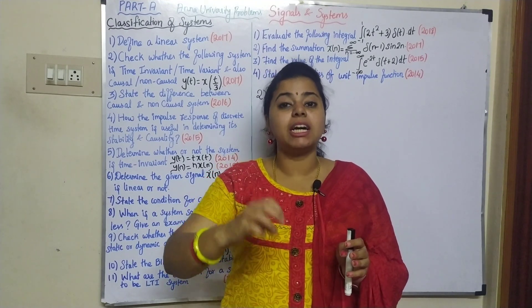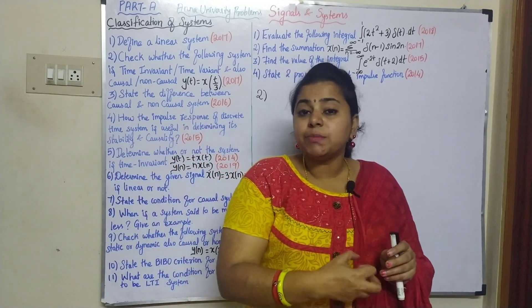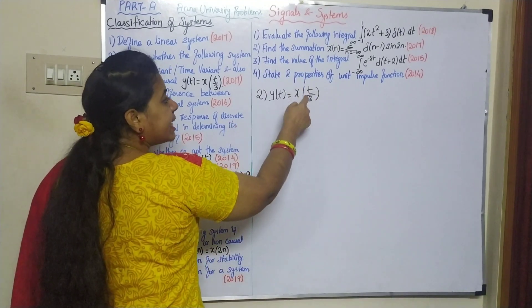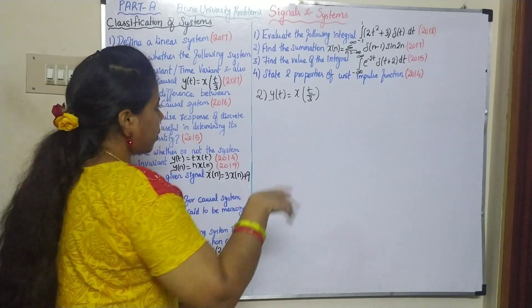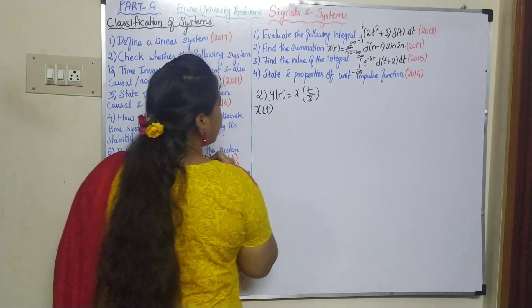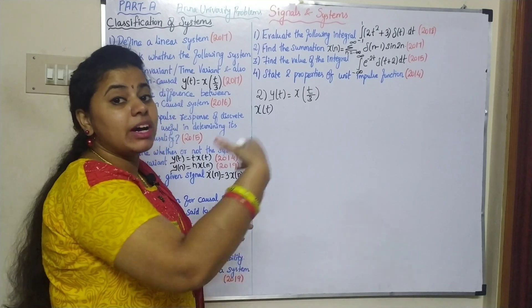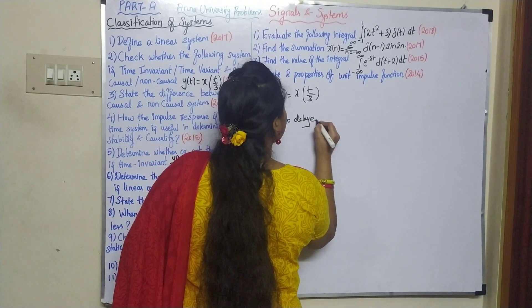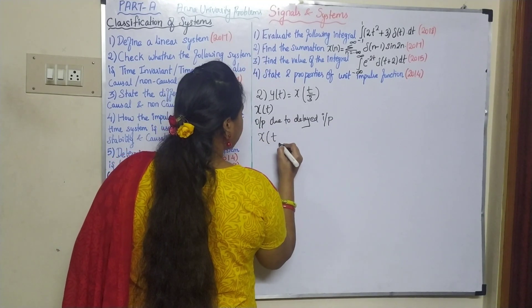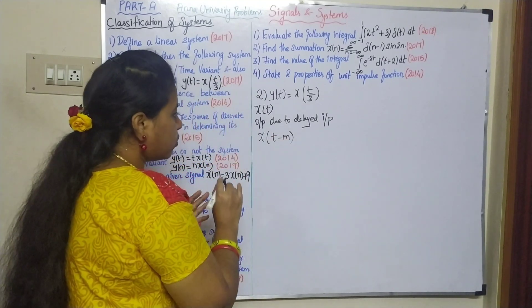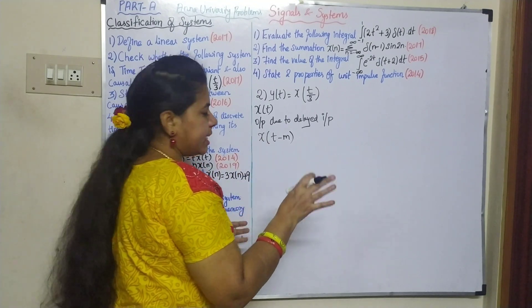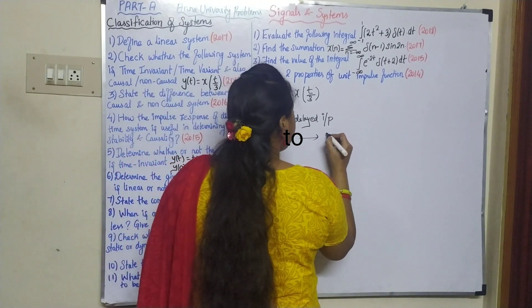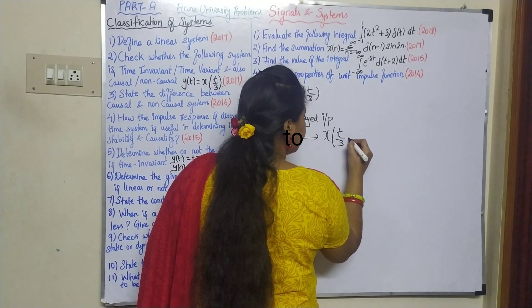First, give the input a delay and find the response to that delayed input. That gives the first equation. Output due to delayed input: x(t) becomes x(t - m). Here you can use T0, or n, or any variable to indicate the delay. Now give the response, then apply the delay to get the delayed output. If the output is delayed, that gives x(t/3) shifted by t0.